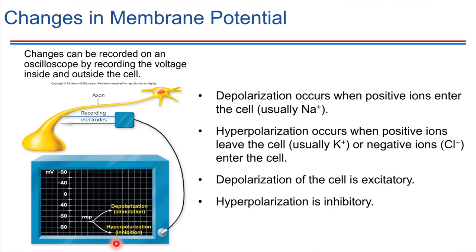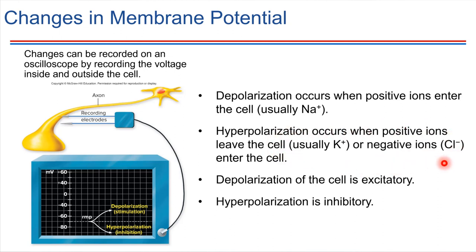We could also accomplish hyperpolarization by bringing more negative ions into the cell. This might be a good spot to pause the video and think about where these charges are located, making sure it makes sense that both of these mechanisms lead to hyperpolarization — it's a bit complicated, so take your time with it. Then we're going to look at some of the details of how these ion movements can happen.